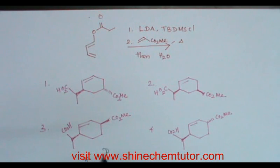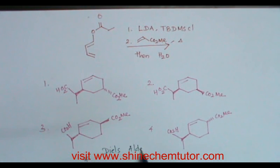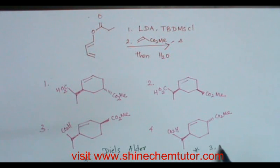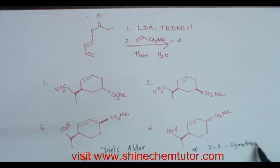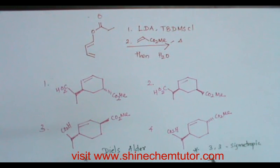The first reaction is Diels-Alder. The second is 3,3-sigmatropic rearrangement — more specifically, Ireland-Claisen rearrangement, which is a modification of Claisen rearrangement.